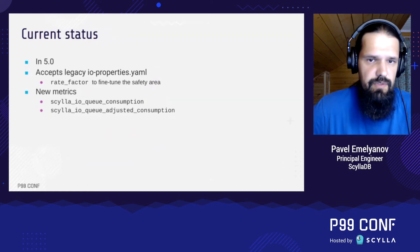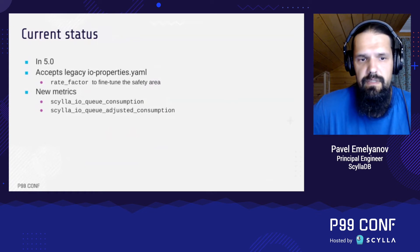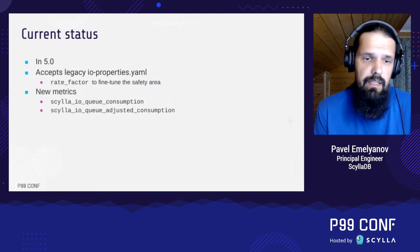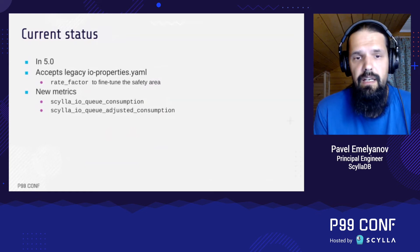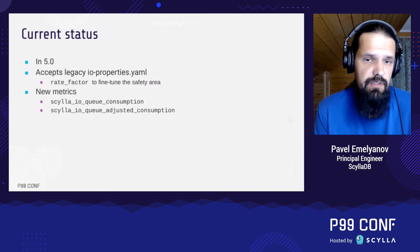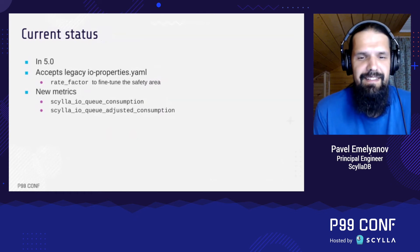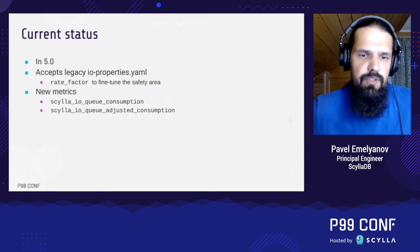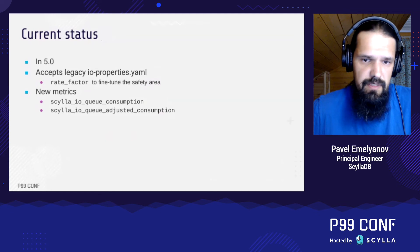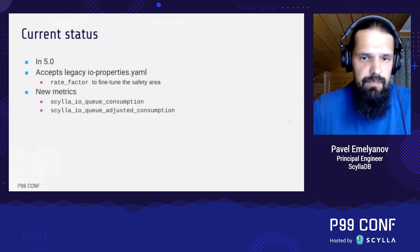So, it's in 5.0. Good news is that it's backwards compatible with older Scylla in the sense that you don't have to reconfigure Scylla to make it work. It will just grab the legacy io.properties file and will schedule requests. For fine-tuning of the algorithm, there is a new parameter in this file called rate factor. It can be used to better approximate the safety area for the specific disk. Along with the new scheduler, there is also a pair of new metrics called consumption. These metrics show how many tokens were consumed by each priority class. They are practically useful for debugging purposes and just fun to look at.